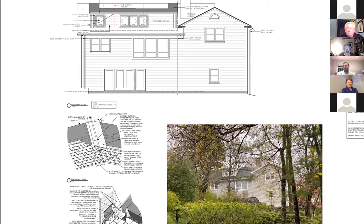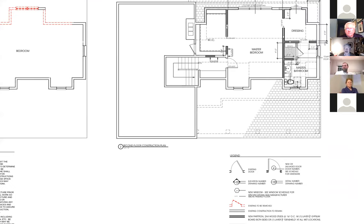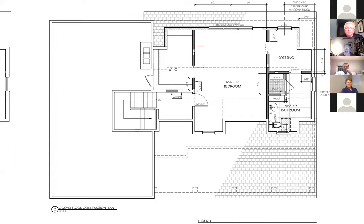Can you show us the floor plan for that room? Sure. The existing dormer happens right around this area, and we're extending it in both directions — to access a nice dressing room, then a master bathroom. There's an odd little closet in this area now; we're just extending it out into the dormer to give it a little more room for his and her storage.